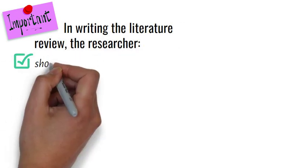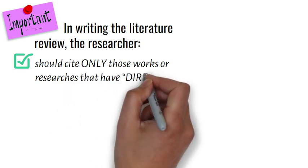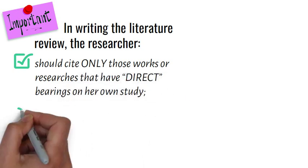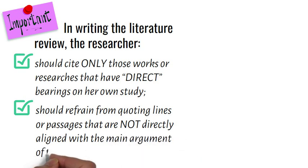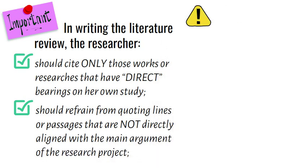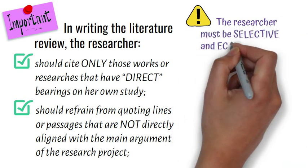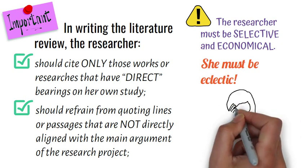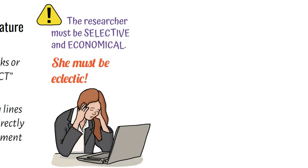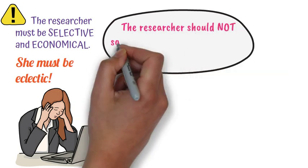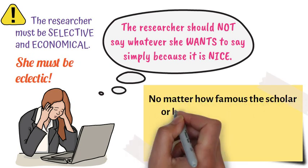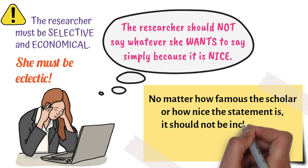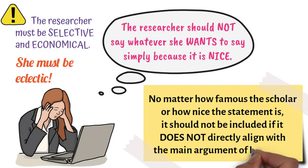It must also be noted that, in writing the literature review, the researcher should cite only those works or researches that have direct bearings on her own study, and should refrain from quoting lines or passages that are not directly aligned with the main argument of the research project. Hence, the researcher must be selective and economical — that is, eclectic — in writing the literature review. No matter how famous the scholar or how nice the statement is, it should not be included if it does not directly align with the main argument of her study.